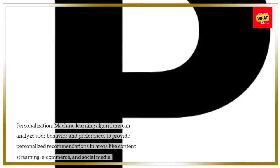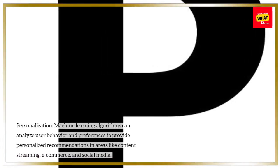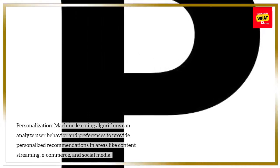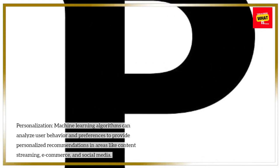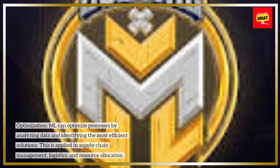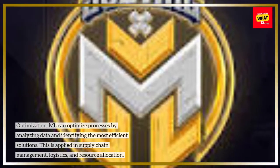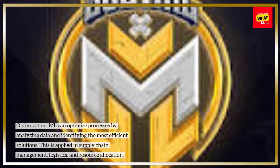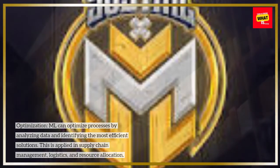Personalization: machine learning algorithms can analyze user behavior and preferences to provide personalized recommendations in areas like content streaming, e-commerce, and social media. Optimization: ML can optimize processes by analyzing data and identifying the most efficient solutions. This is applied in supply chain management, logistics, and resource allocation.